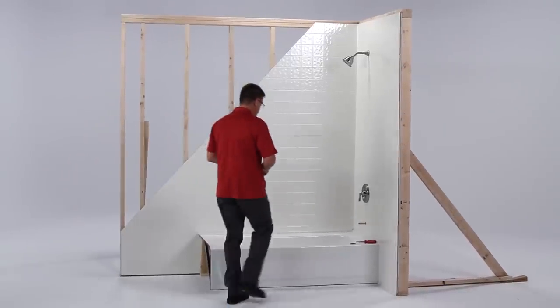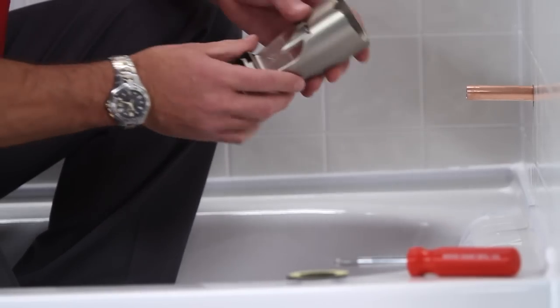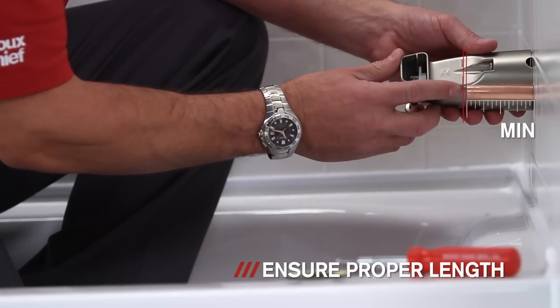Check to see that you have an adequate amount of copper protruding from the wall. Using the hash mark on the bottom of the SmartSpout, make sure your copper is the proper length.